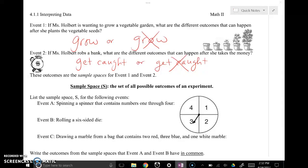For event two, Ms. Holbert robs a bank and what are the different outcomes that can happen after she takes the money? Well, she could get caught or she could not get caught. Either she's going to get away with it or she's not and those are the two events. So all these options that I have listed, they're what's called the sample space. So all of the possible options listed out is called the sample space. Here's that vocabulary term in bold for you right there.